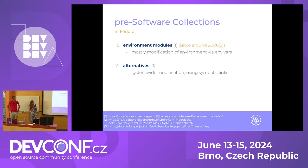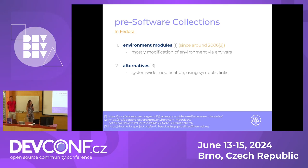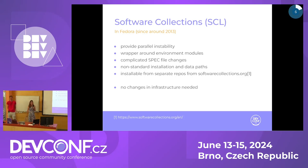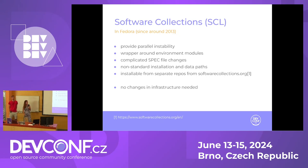Even before software collections, there were already some possibilities for installing multiple streams or packages in Linux distributions. There were - and still are - environment modules and alternatives. Environment modules change the environment of running programs and alternatives change settings system-wide. Further attempts were done even though these solutions existed. Software collections were initiated in Fedora around the year 2013.